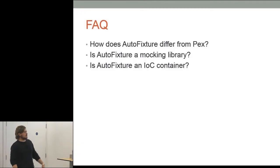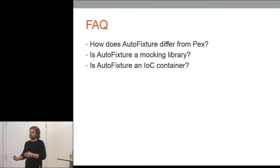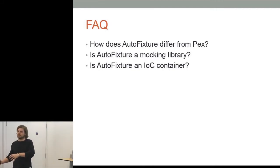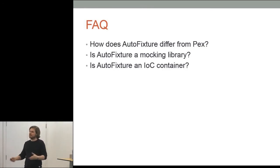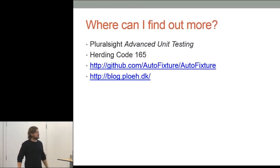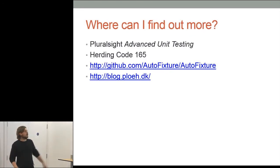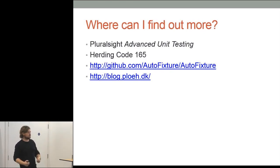A couple of frequently asked questions: How does it differ from PEX? PEX is an automated test case generator, whereas AutoFixture does automated test data generation — a slight difference. Is it a mocking library? No, but it can hook into your mocking library of choice. Is it an IOC container? No — it has those sorts of behaviours but that's not really its purpose at all. You can find out more in the Pluralsight advanced unit testing course by Mark, and Hanselminutes episode 165, which is an interview with Mark and is really good, packed full of stuff. Also check out his GitHub page and blog.